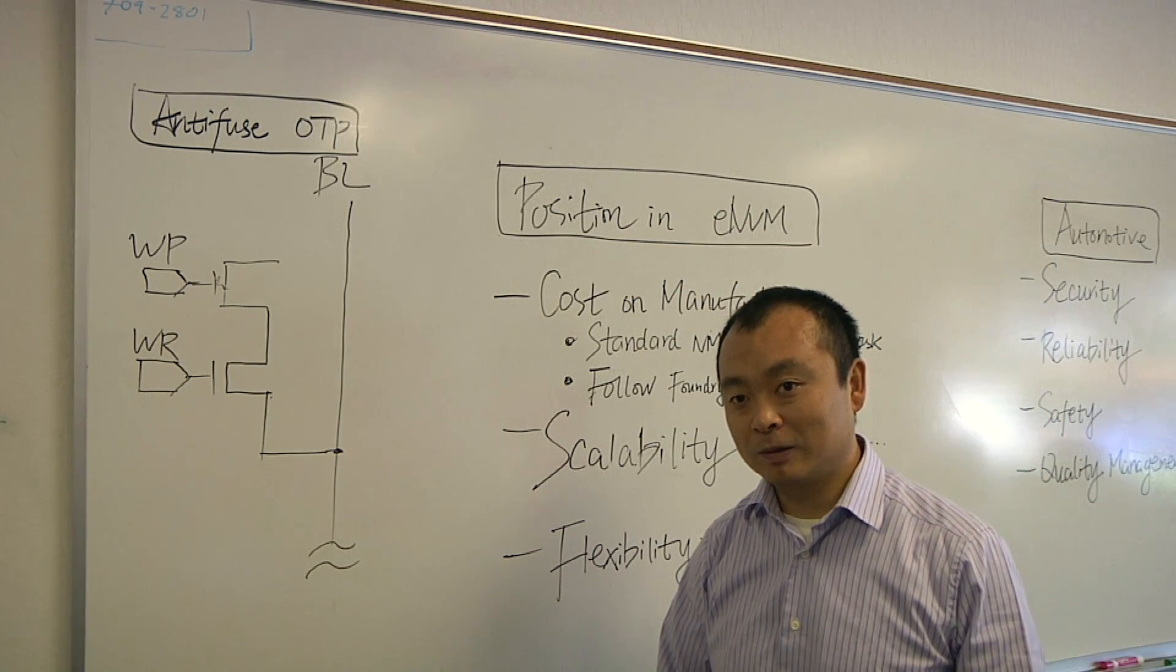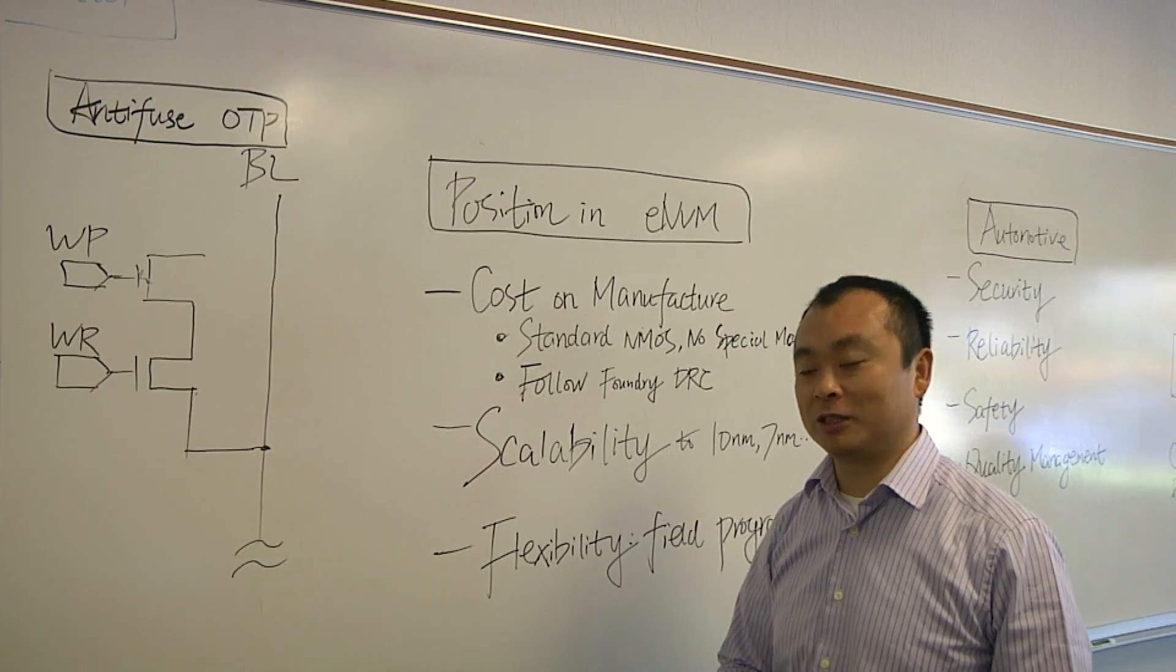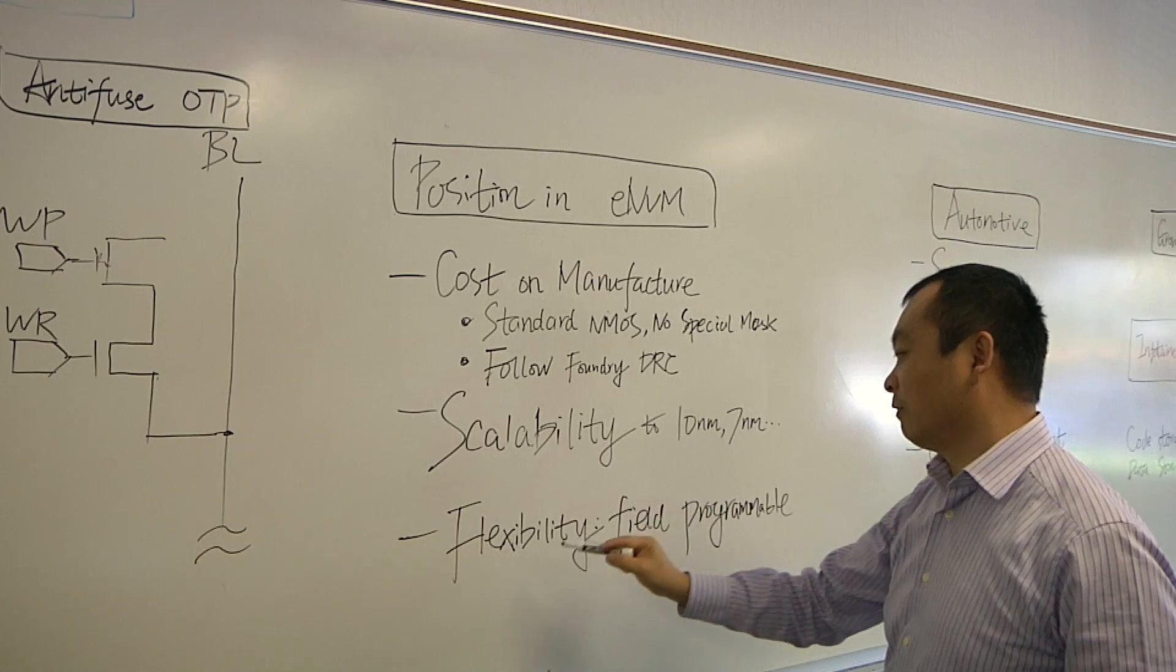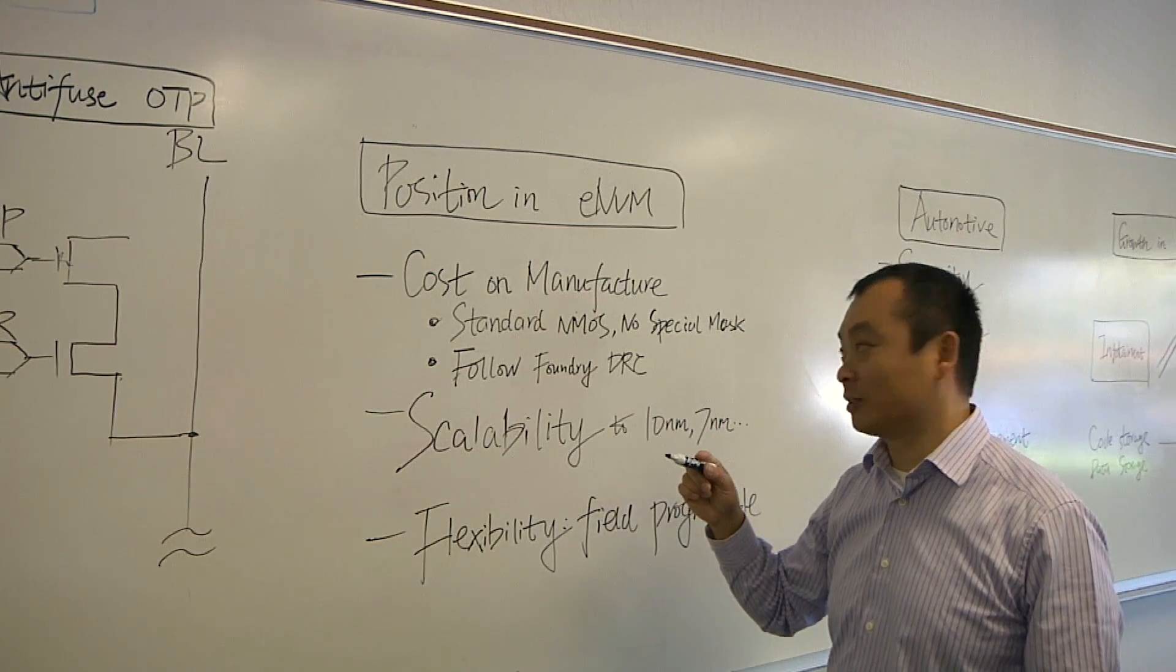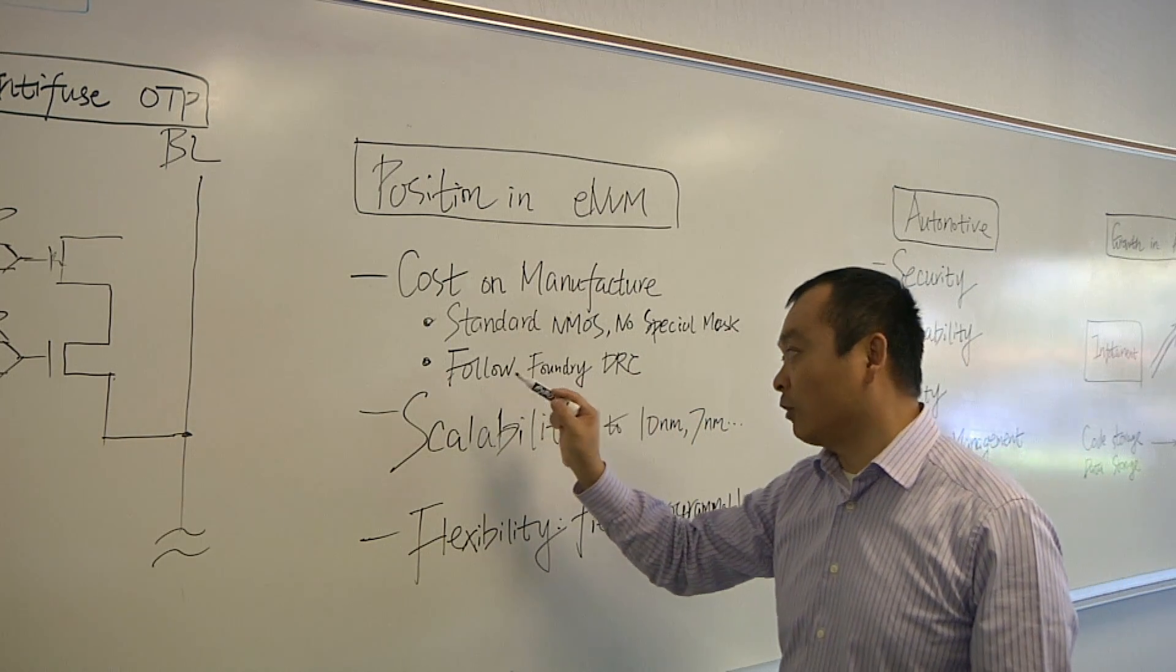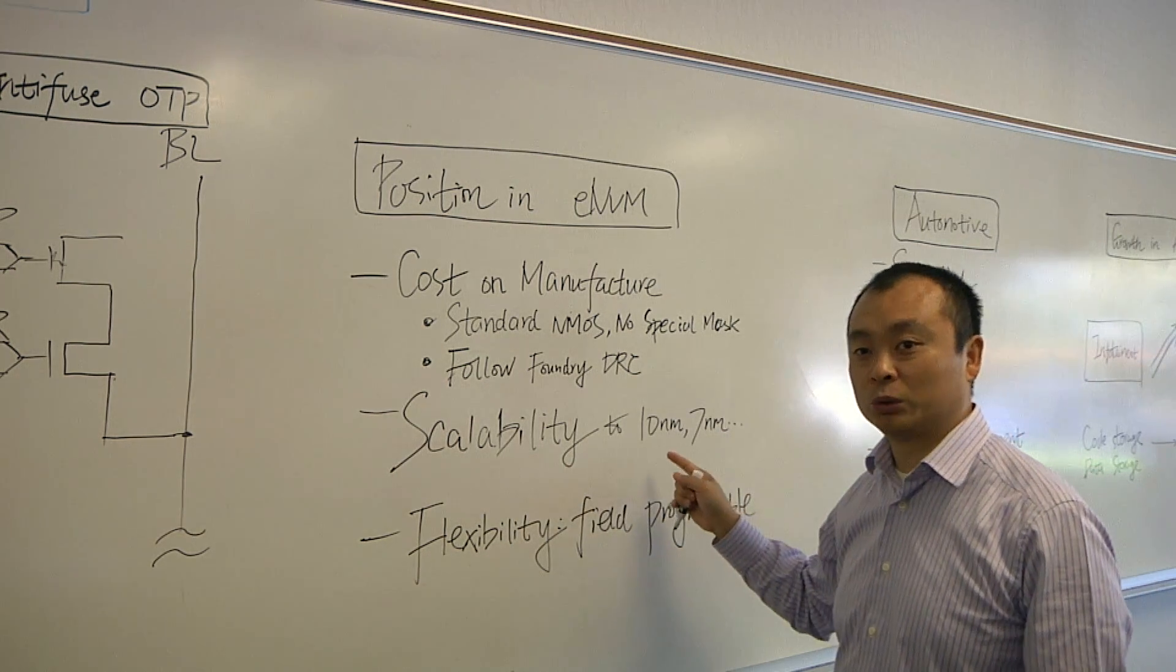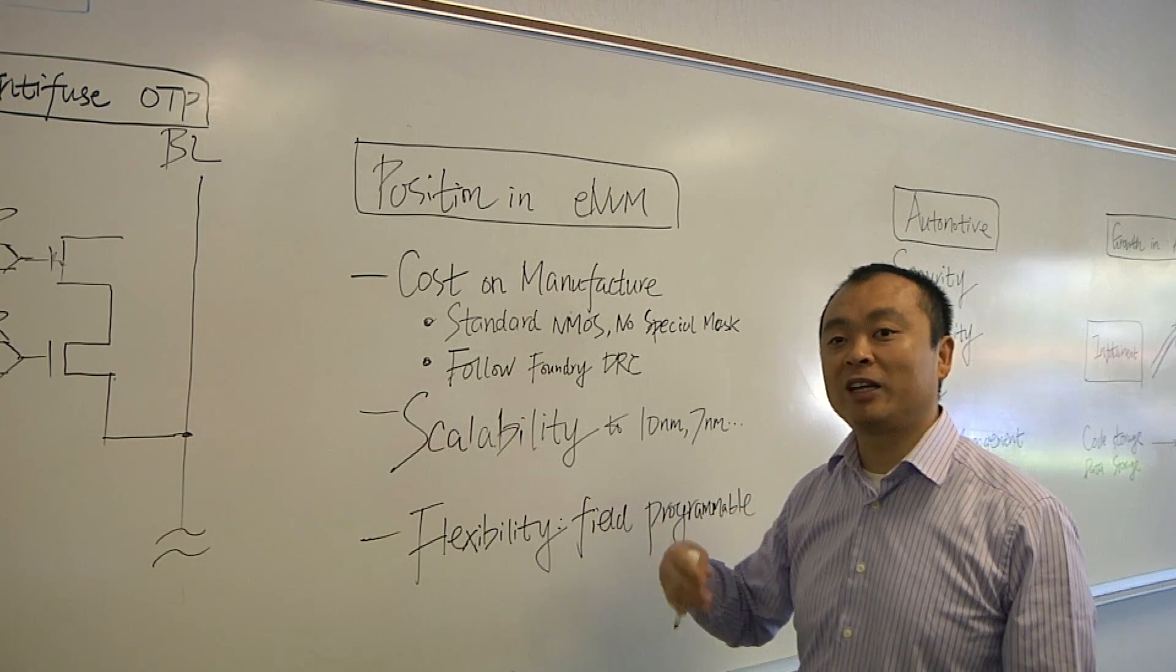So what kind of challenges are you seeing in embedded NVM? So in the embedded NVM, we know that the solutions in advanced process nodes are limited. Anti-fuse OTP is a very ideal solution because it provides the features like low-cost and scalability and flexibility. We say it is low-cost because it uses a standard NMOS to form the memory bit cell. And it doesn't need any special mask in addition to any standard logic process. And also, it follows the standard foundry design rules. That's why we say it's low-cost to manufacture. And also, it is scalable to the advanced process nodes to 10 nanometer or 7 nanometer and below. So that is not available for many of the embedded NVM solutions.